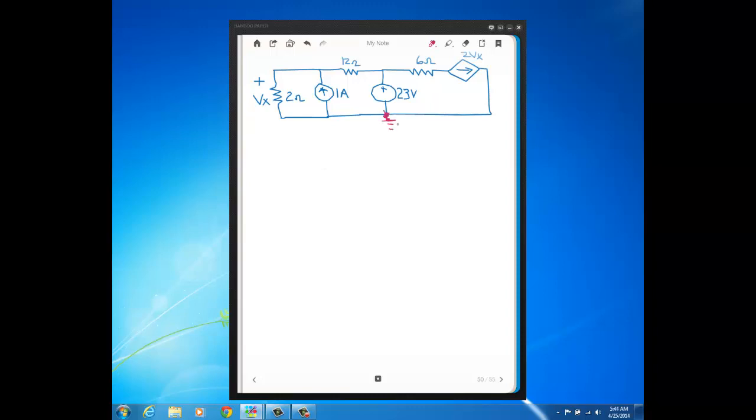And the reason I'm going to choose this bottom node as ground is because as we learned last video, if one side of a source is ground, then the other side is known.